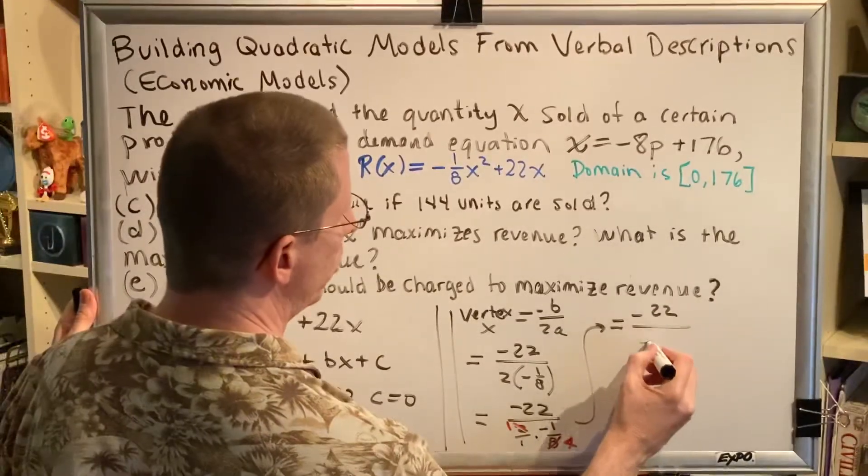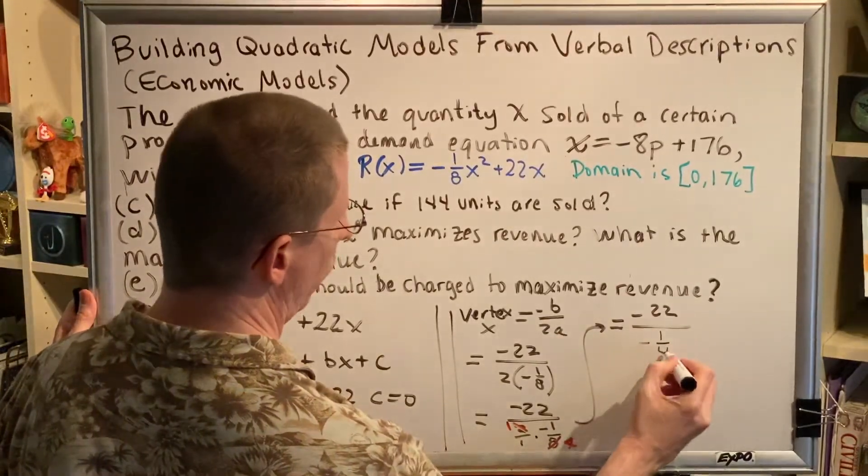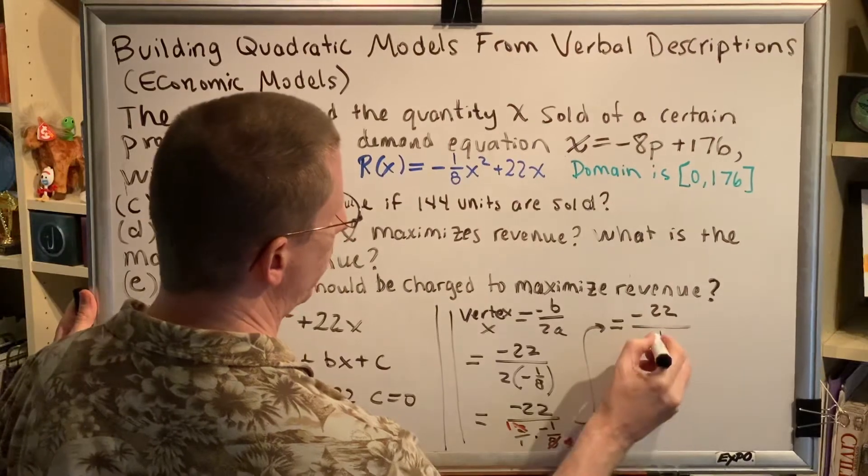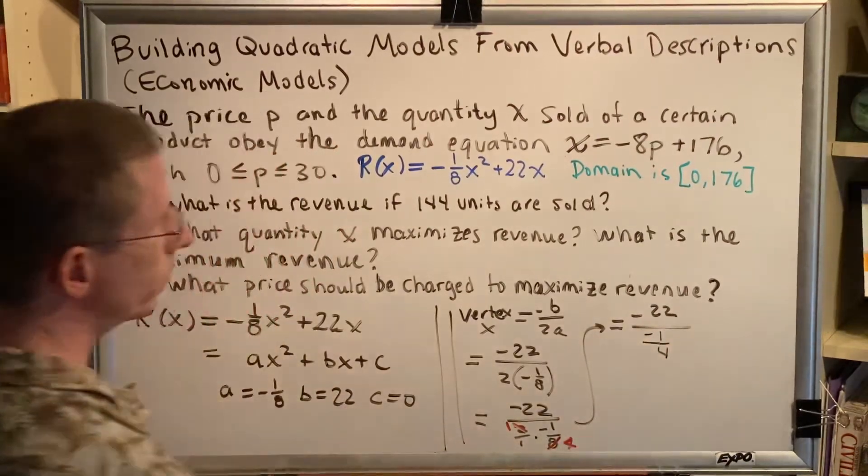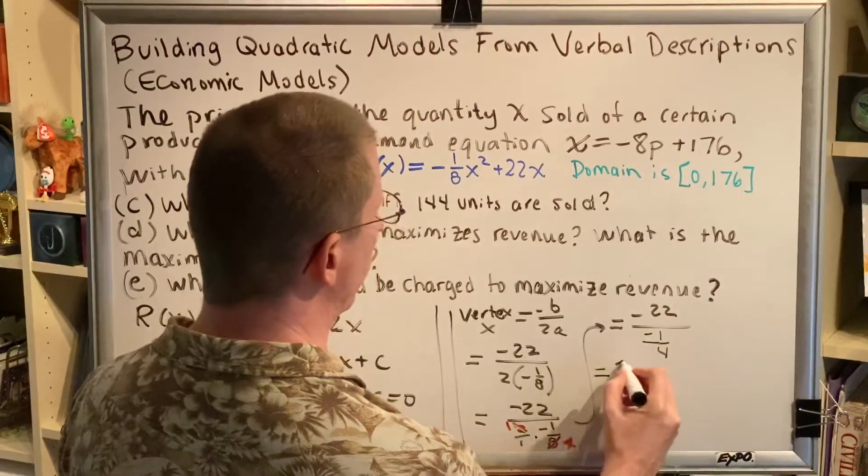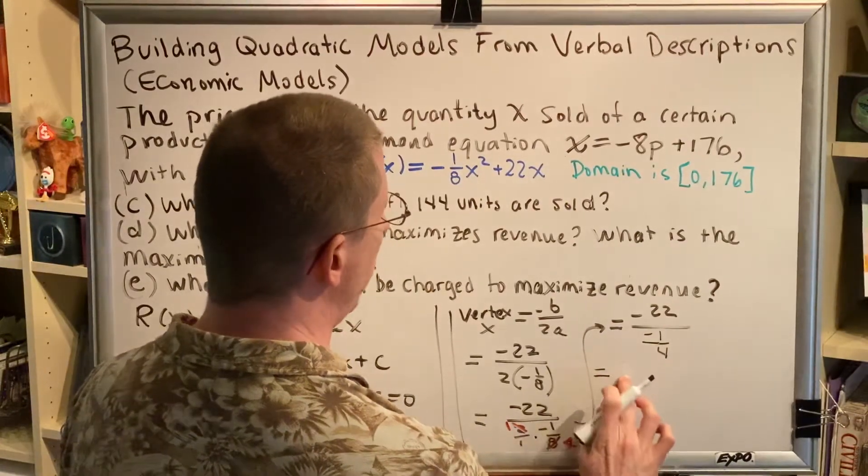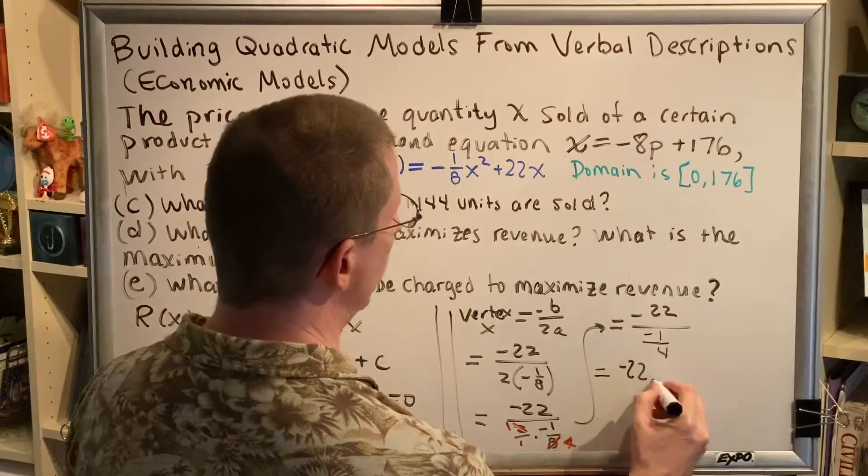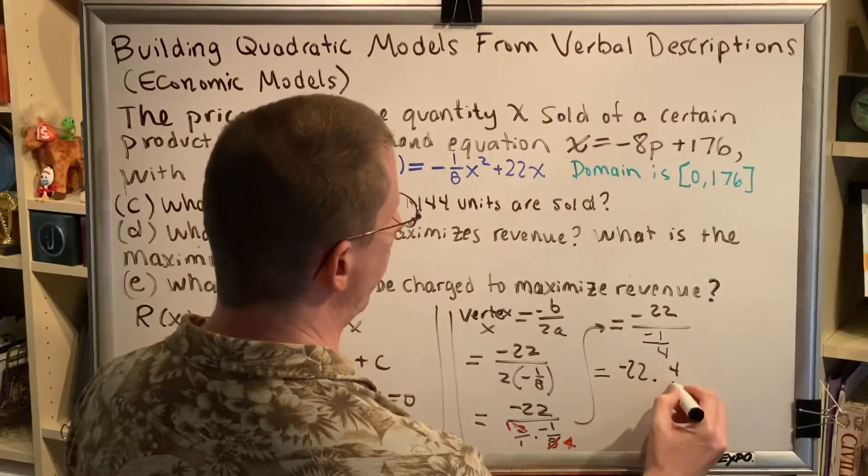So, I have negative 22 divided by negative 1/4. And I'll choose to put the negative up here with the 1. Now, how do you divide fractions? You keep change flip. So, this is negative 22 times 4 over negative 1.